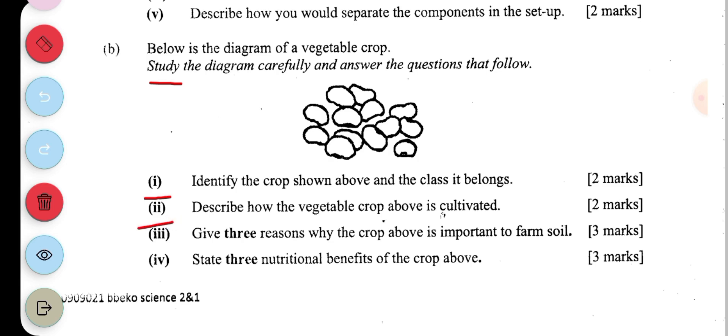Then the next question is describe how the vegetable crop above is cultivated. It is cultivated by sowing of the seed.